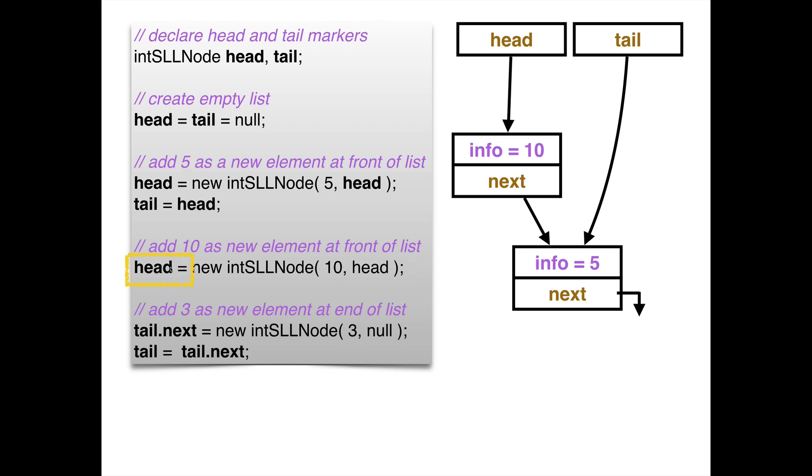So the second half is to assign head to be a reference to that. So head now becomes a reference to this new element, which contains 10. And its pointer points there. So you see that I have a very nicely chained list of two elements, two cells.